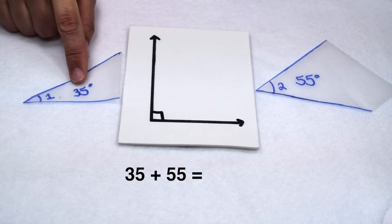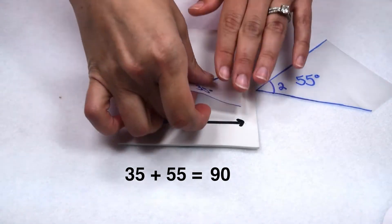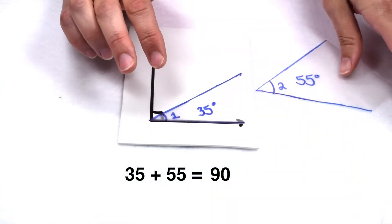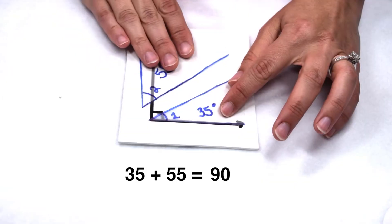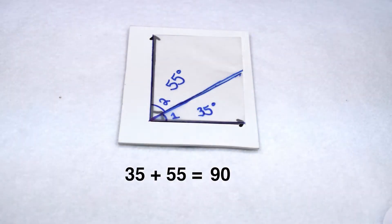Well if we add them together, 35 plus 55, we would get 90, so they are complementary angles. If we want to test it out, we could cut them out and put them within our right angle to make adjacent angles. When we do that, we see that they fit within our right angle, so they are still adding up to a sum of 90 degrees.